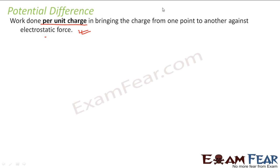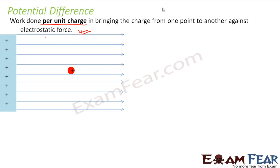Potential and potential energy are very similar — when we talk about potential, it is per unit charge. Similarly, potential energy difference and potential difference are the same thing except that potential difference talks about per unit charge. So the amount of work done to bring an object from one point to another is nothing but the potential difference between the starting point and the ending point.